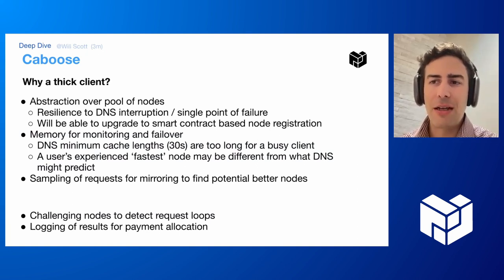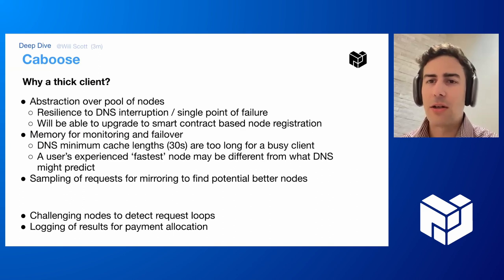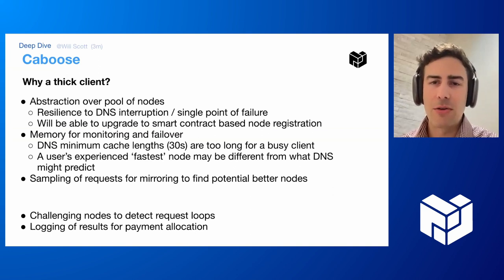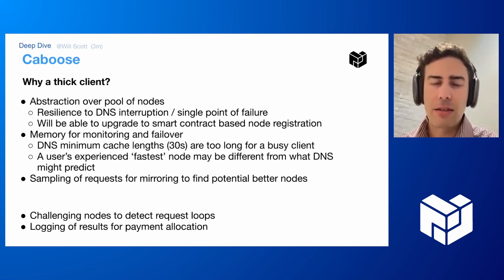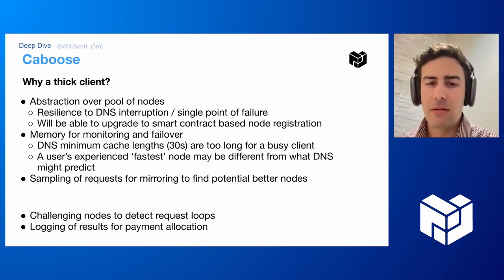If you imagine that future in a year or so, we can register Saturn nodes through a smart contract on-chain in a decentralized way. But you've then got to have a client that finds who's registered and sends the request there. As long as you've got a thicker software stack — be that a JavaScript service worker or Caboose for Golang clients — they can go out and find the set of active nodes near them in a way that is decentralized and resilient.